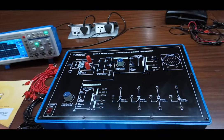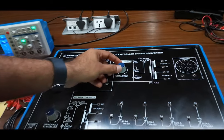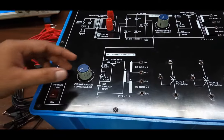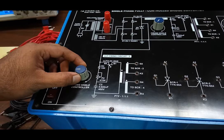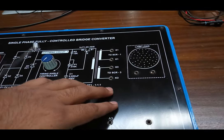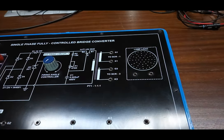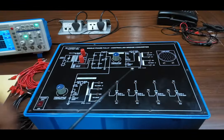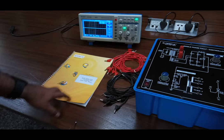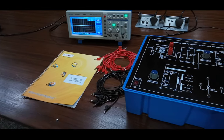This is the firing circuit 1 and this is the firing angle controller. This is the firing circuit 2 and this is the firing controller for this circuit. Here, the lamp load is already installed inside the kit. We can see the intensity from these holes. We are also offering user manuals and patch cords with this kit.